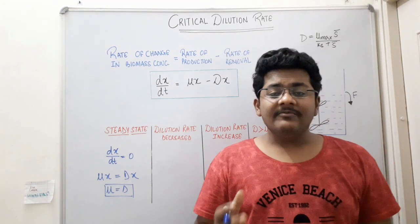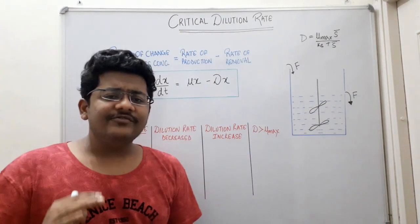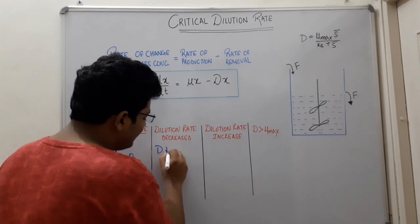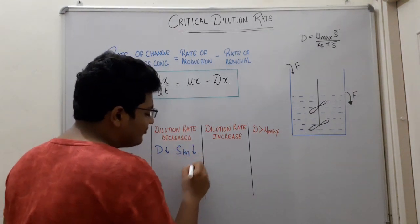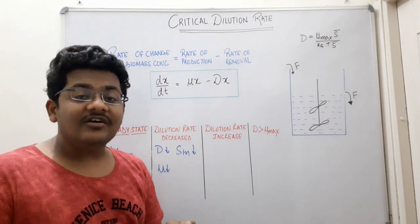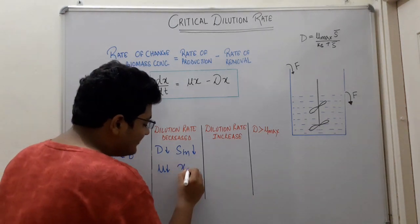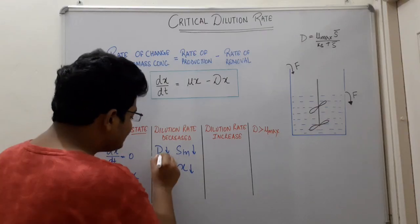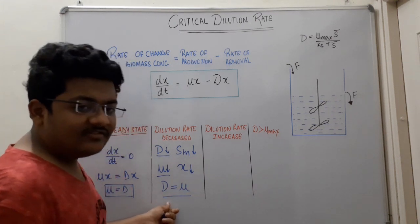Now we will try to deviate the system from steady state conditions by varying the dilution rate. If we decrease the dilution rate a bit, the substrate inflow inside the bioreactor is going to decrease, which means μ, the specific growth rate, is going to decrease due to lack of substrate. Therefore μ decreases and the steady state biomass concentration also decreases. After some time, a new steady state is achieved where the decreased μ equals the decreased D.